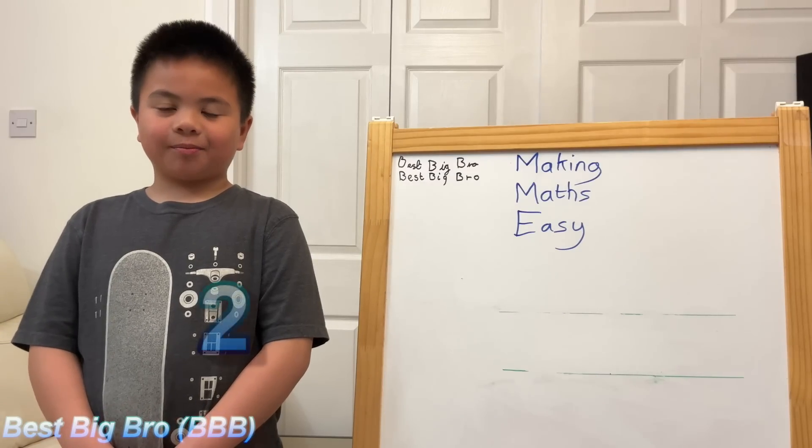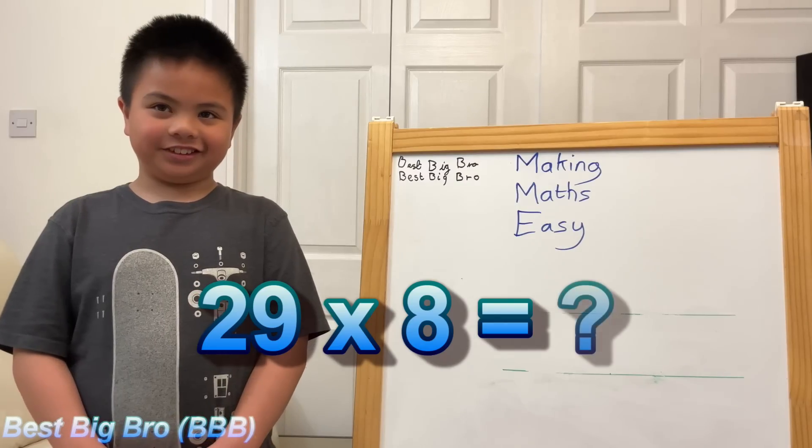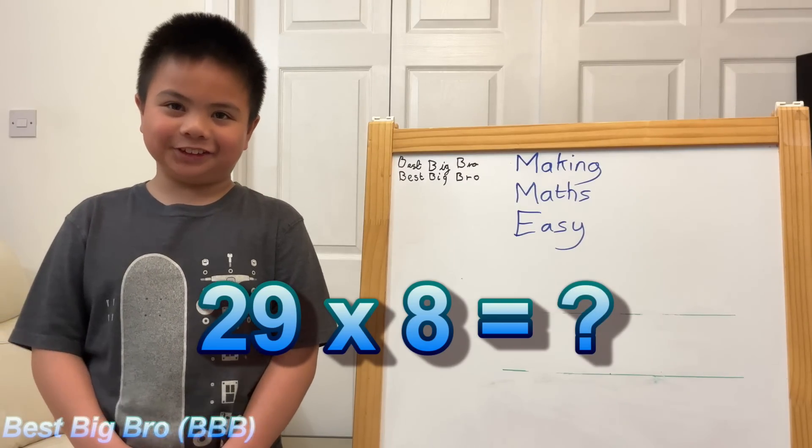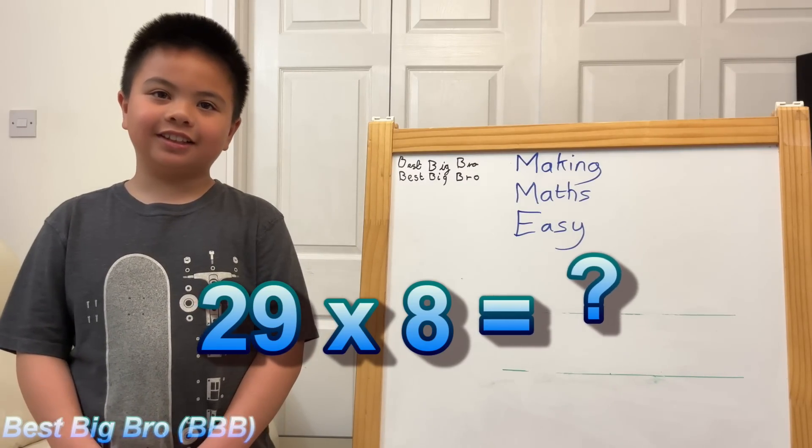What's 29 times 8? 232. Can you show me how you work that out?